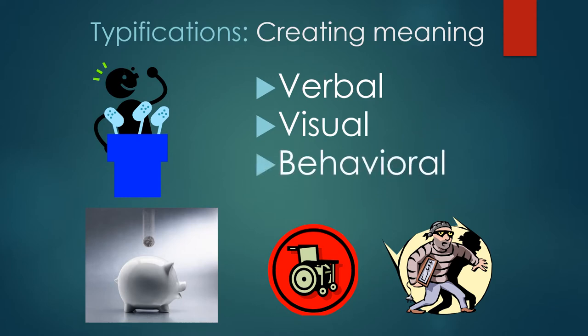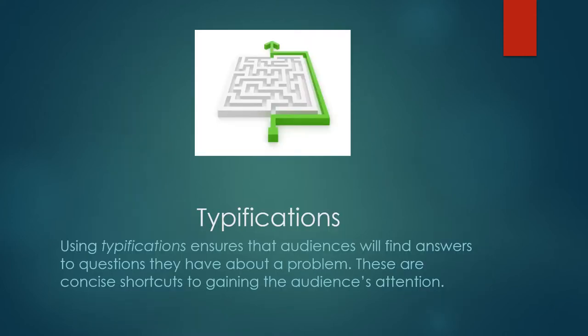Behaviors are also important. When we observe other people doing ritualistic kinds of behaviors like gestures, we shortcut communication. If you see somebody raising their left fist up high, you probably think resistance or power. If you see somebody coming towards you holding their hand out, you immediately think friendliness and politeness. So all three of these — verbal, visual, and behavioral — are sources of typifications, and they make communication easier, shorter, and more concise.